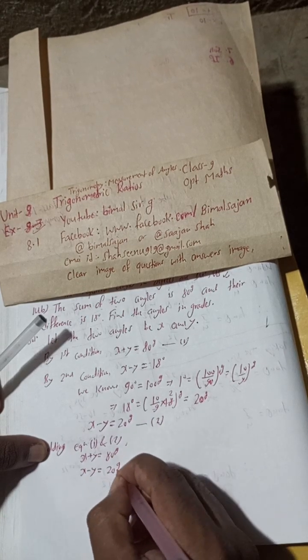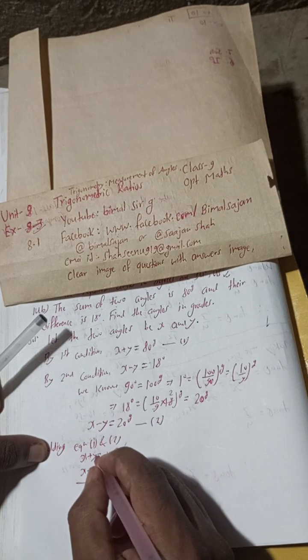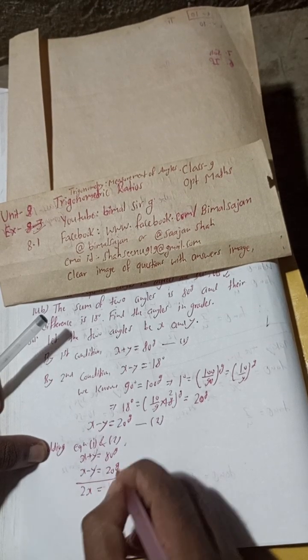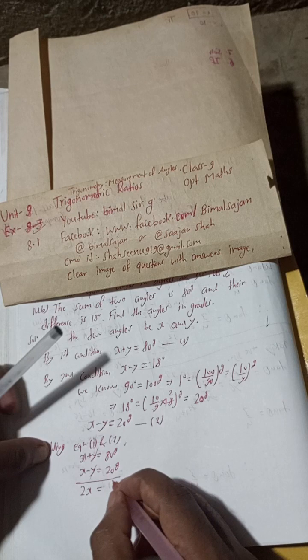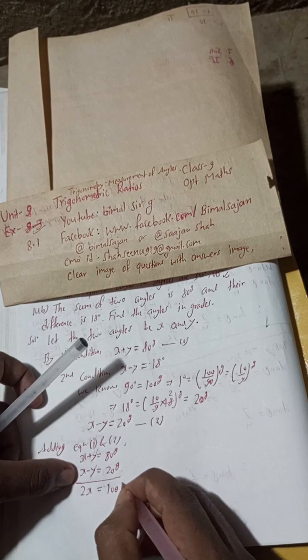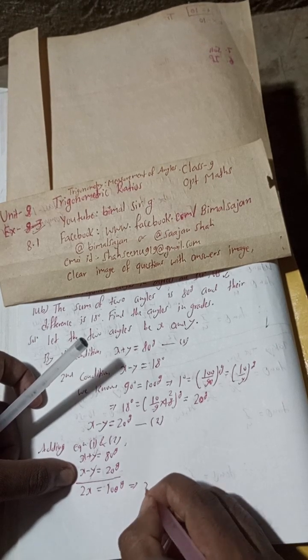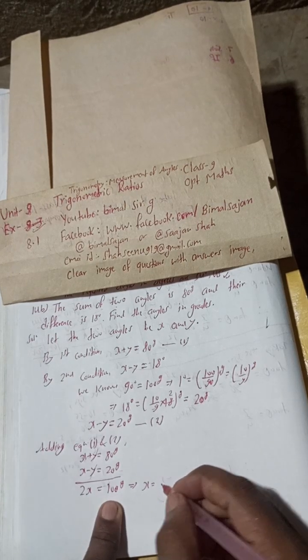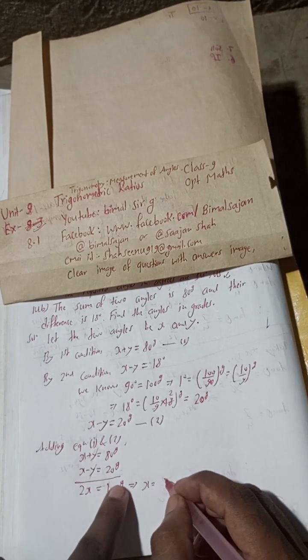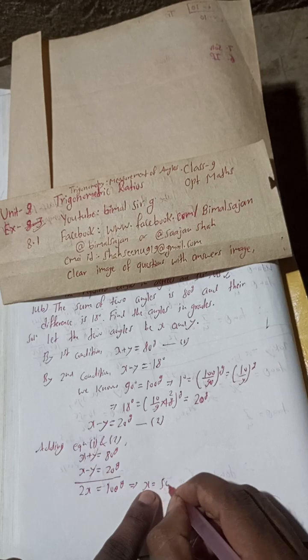2x equals 100 grade. This implies x equals 100 divided by 2, which equals 50 grade. We got x equals 50 grade.